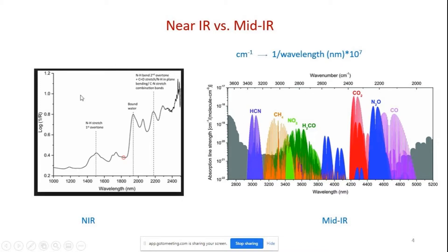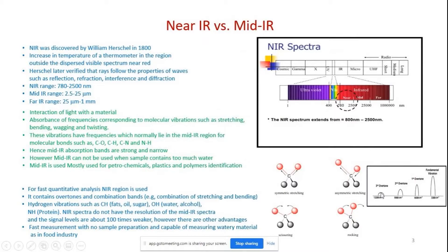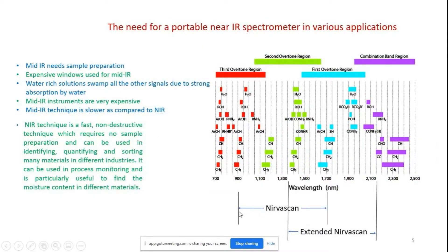The need for chemometrics comes from the complexity of the near IR spectrum. The absorption band diagram for near IR spans 700 to 2500 nanometers, with different overtone regions and a combination band region. The first overtone is stronger than the second, and the second stronger than the third. The standard Nervascan works from 900 to 1700 nanometers, covering mainly the second overtone region. The extended version works from 1350 to 2150 nanometers, covering the first overtone region.